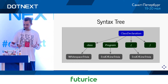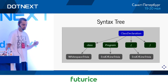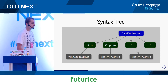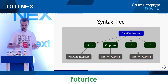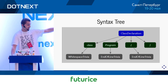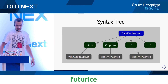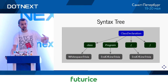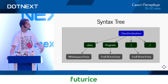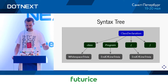A Roslyn syntax tree is composed of three types of elements. First are syntax nodes — almost all aspects of the language are modeled as a syntax node. In this case, a class declaration is a syntax node. Declarations, expressions, parameter lists, return types — all of those things are modeled as syntax nodes.